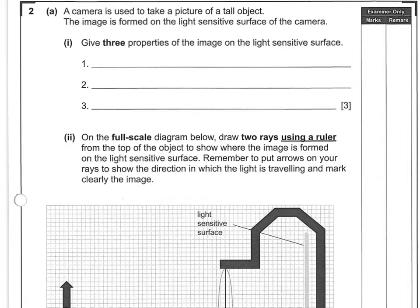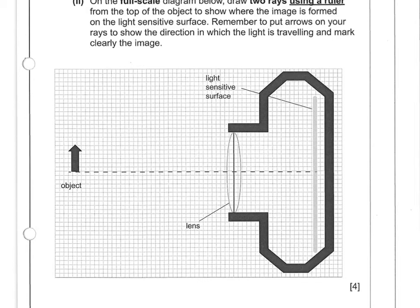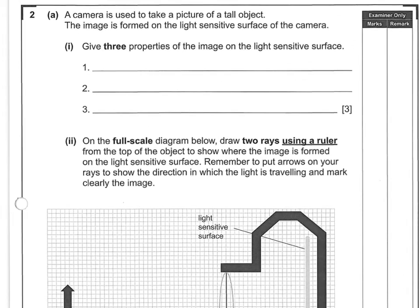Question 2, Part A. A camera is used to take a picture of a tall object; the image is formed on the light-sensitive surface. Give three properties of the image. The image will be much smaller than the object since it's much further from the lens — so it's diminished. A ray through the optical centre shows the image will be upside down — inverted. And the image actually meets at the film, so it's real. The three properties are: real, inverted, and diminished.